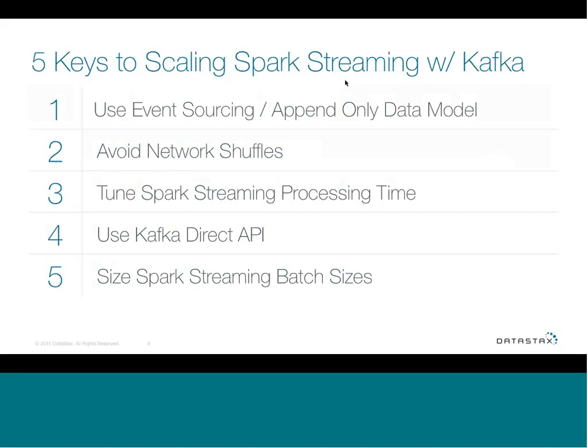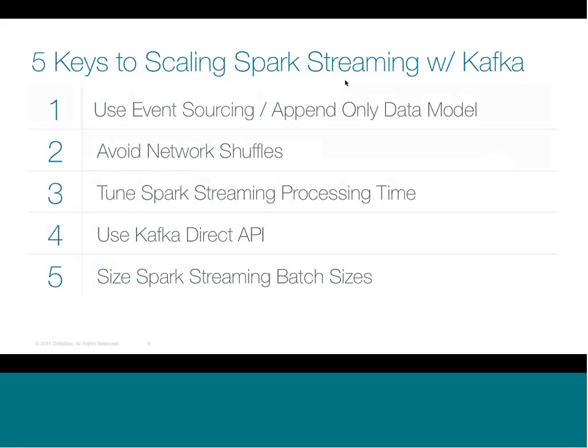So, let's go into the five keys to scaling Spark Streaming with Kafka. These are the five most common ways of scaling. First is event sourcing and the data model, then avoiding network shuffling, how we tune Spark Streaming for processing time using the Kafka Direct API, and then the fifth point is sizing Spark Streaming. The first thing is our data model — the data model is key. Having an effective data model that allows us to quickly capture and store our data provides much better performance as we store the data into Cassandra.